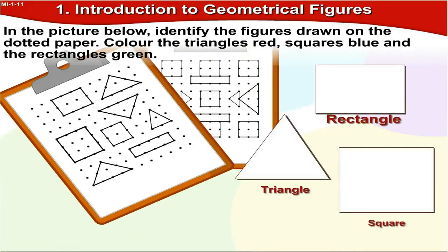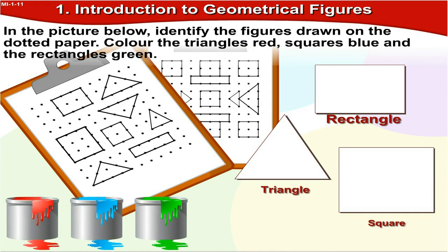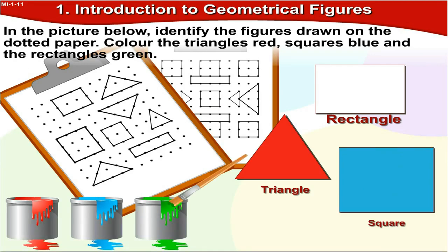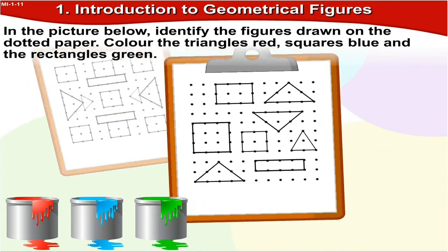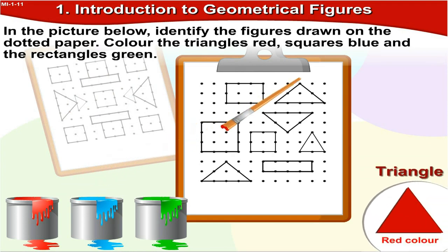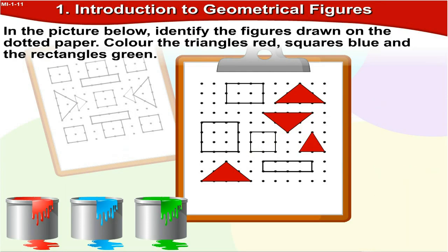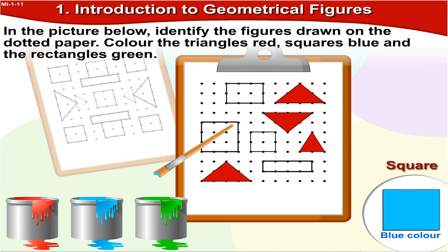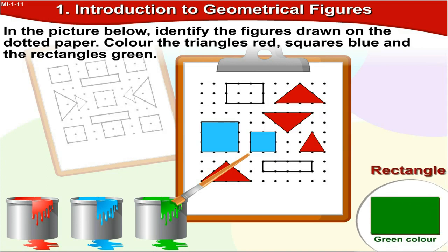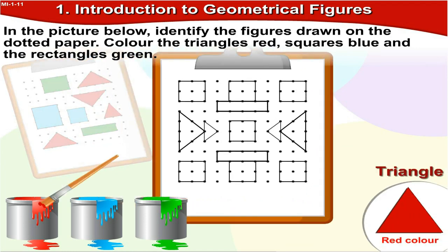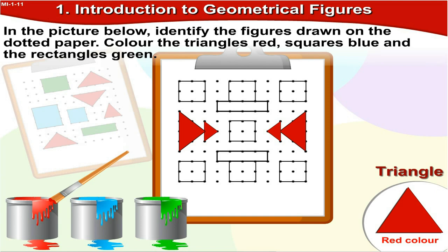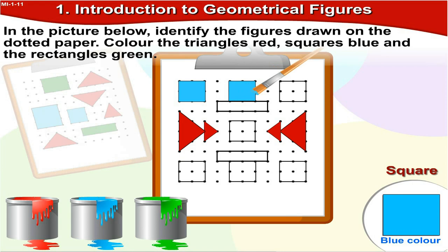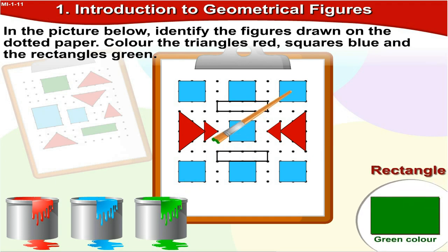In the picture below, identify the figures drawn on the dotted paper. Colour the triangles red, squares blue and rectangles green. This is a triangle — let us colour it red. That is a square — we'll colour it blue. Now this is a rectangle — let us colour it green. This figure is triangular in shape — colour it red. This is a square — colour it blue. That's a rectangle — colour it green.